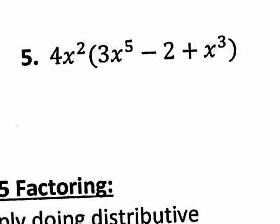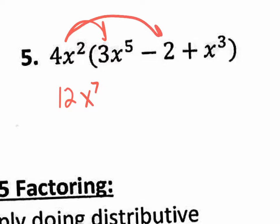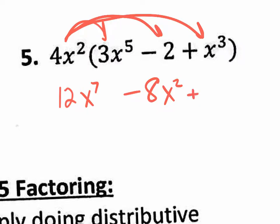And the last one: distribute 4x squared times 3x to the fifth. The coefficient 4 times the coefficient 3 is 12. Then x squared times x to the seventh — when you're multiplying, you add those exponents. Then 4x squared times 2 gives negative 8x squared. And negative 4x squared times x to the third gives 4x to the fifth.